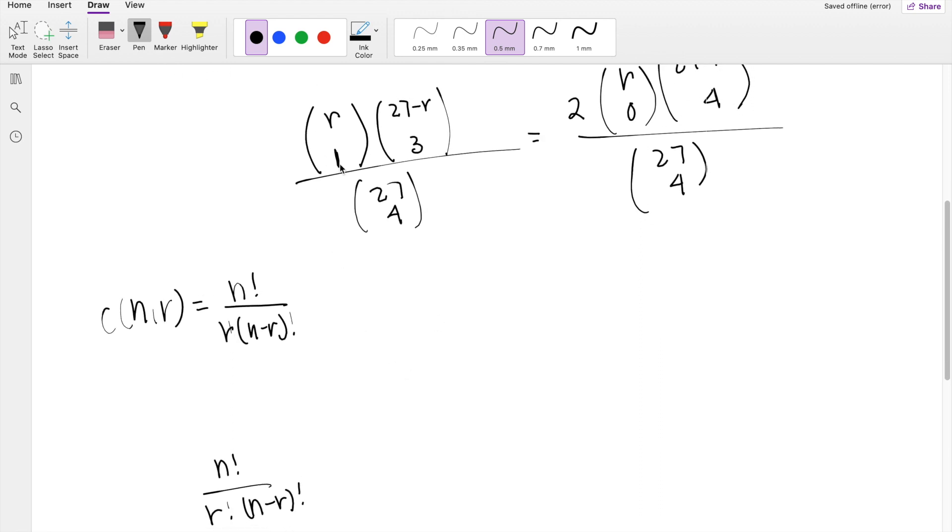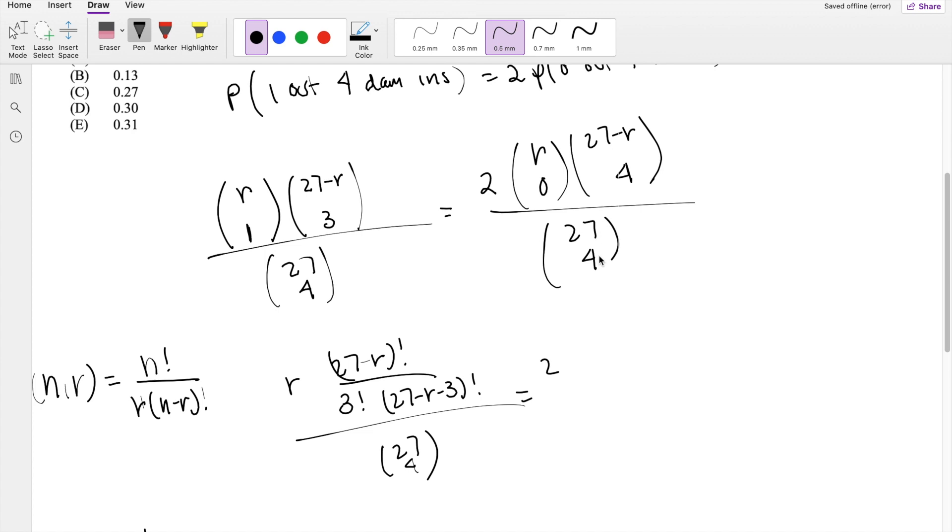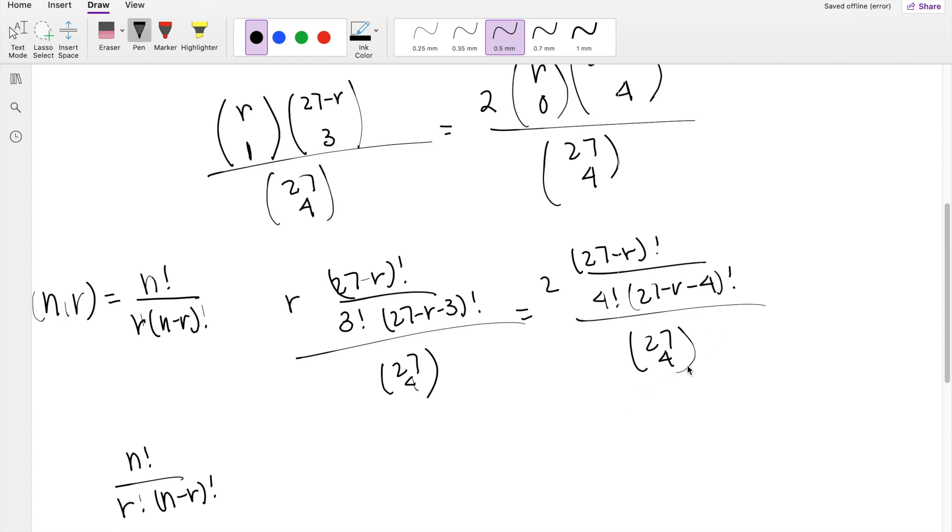So anyways, if it is R choose 1, anything choose 1 is just going to be R. 27 minus R choose 3 is going to be equal to 27 minus R factorial divided by 3 factorial times 27 minus R minus 3 factorial divided by 27 choose 4. And that's equal to twice. Anything choose 0 is just going to be 1. 27 minus R choose 4 is going to be 27 minus R factorial divided by 4 factorial times 27 minus R minus 4 factorial divided by 27 choose 4. But the thing is, you can multiply 27 choose 4 on both sides and cancel those out.